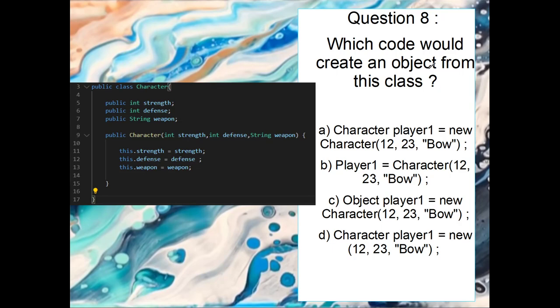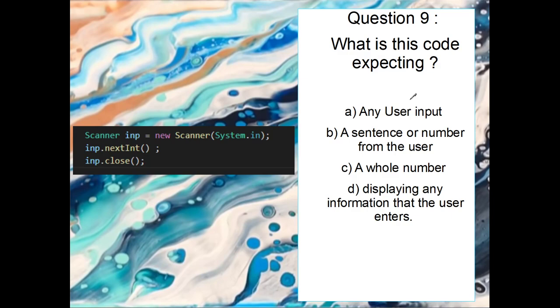Okay, number eight. Which code would create an object from this class? So we have character, so that's the name of the, so that matches up. We've got the character, the object's name, which is fine. New, and then we have strength, which is an int. Defense, which is int. And bow, which is a string. So that looks okay, so that potentially could be it. This one's missing the data type, the object data type, so that can't be that. This one is saying it's an object, but we want to say it's the character object, so it can't be that. And this one is missing the character here, so we're saying new character, so it can't be that. So it's A, this one is going to be able to create an object from the class.